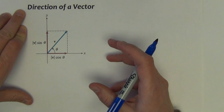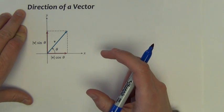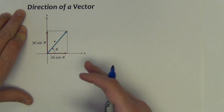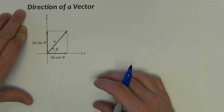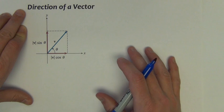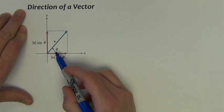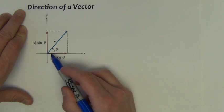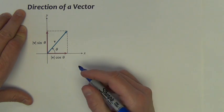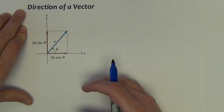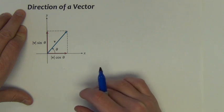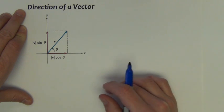At the very start of this video, we said that a vector was made up of two quantities. It had a magnitude and a direction. We talked a lot so far about the magnitude of a vector. Now we need to talk about the direction of a vector.